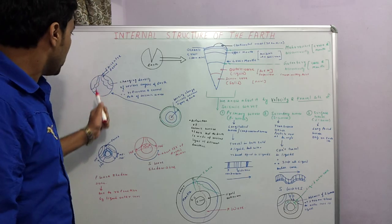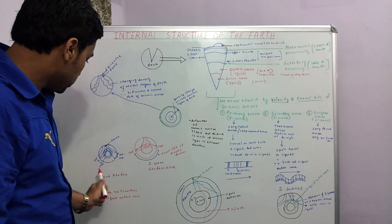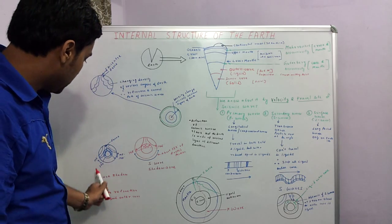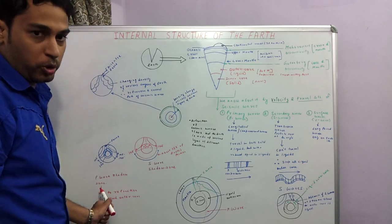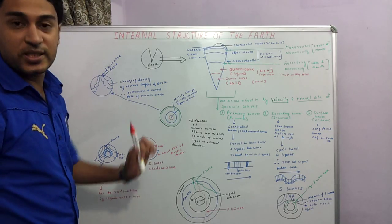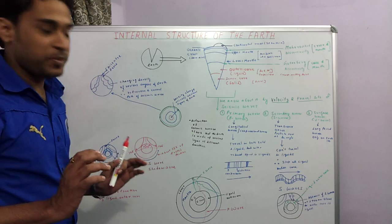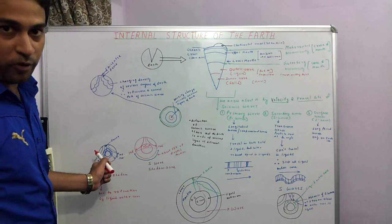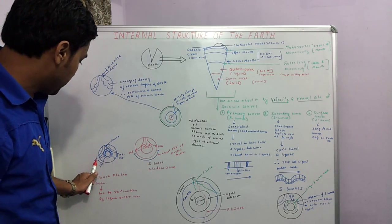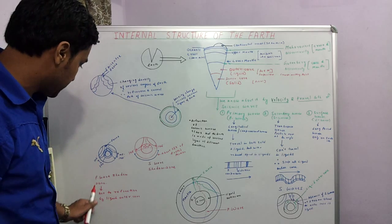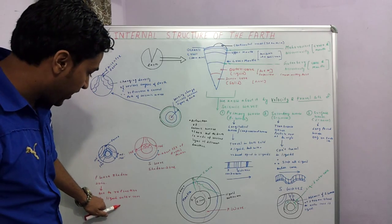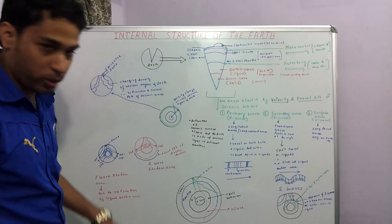And because of refraction, we also come across a phenomenon called the P wave shadow zone. Shadow zone is a zone where there are no seismic waves. In the context of P waves, shadow zone is between 105 to 140 degrees. And this happens because of refraction in the liquid outer core.